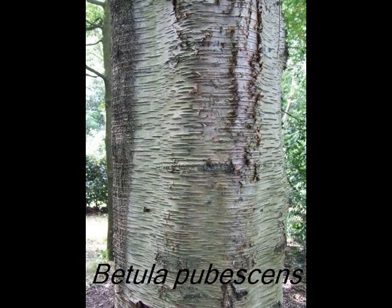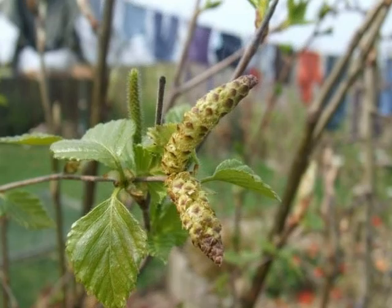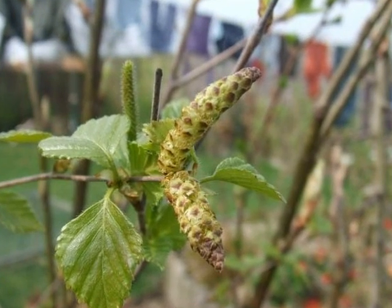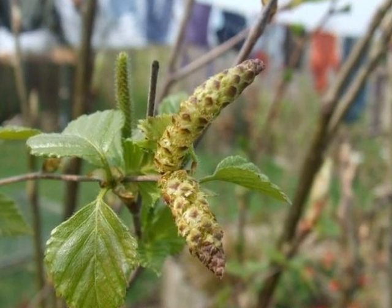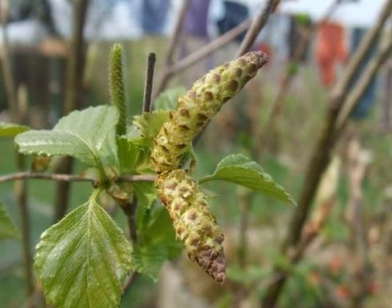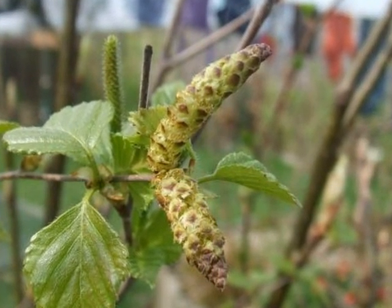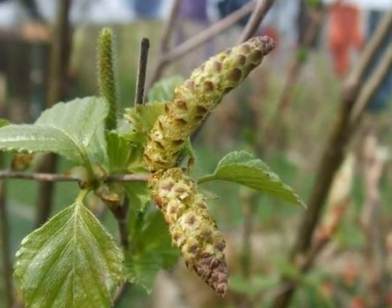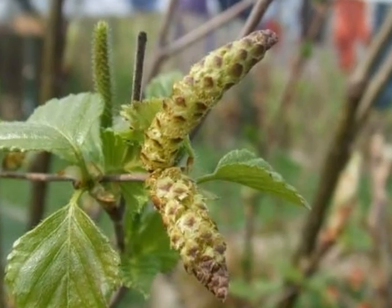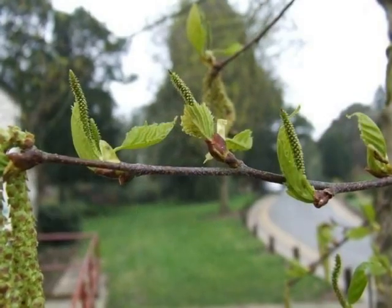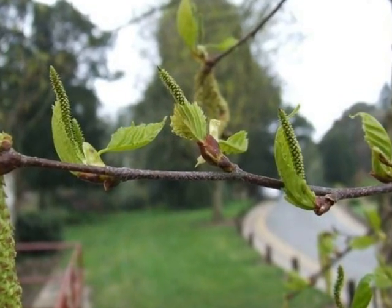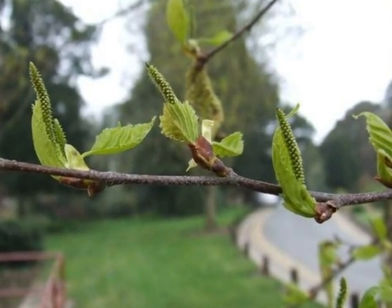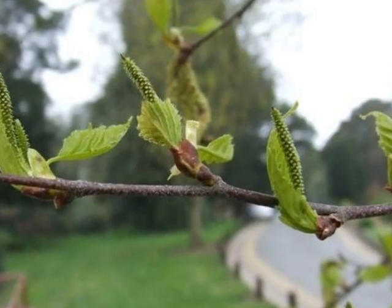To identify Betula pubescens, I'll be looking for yellowy male catkins emerging in March to April, and green female catkins held erect above the shoot.